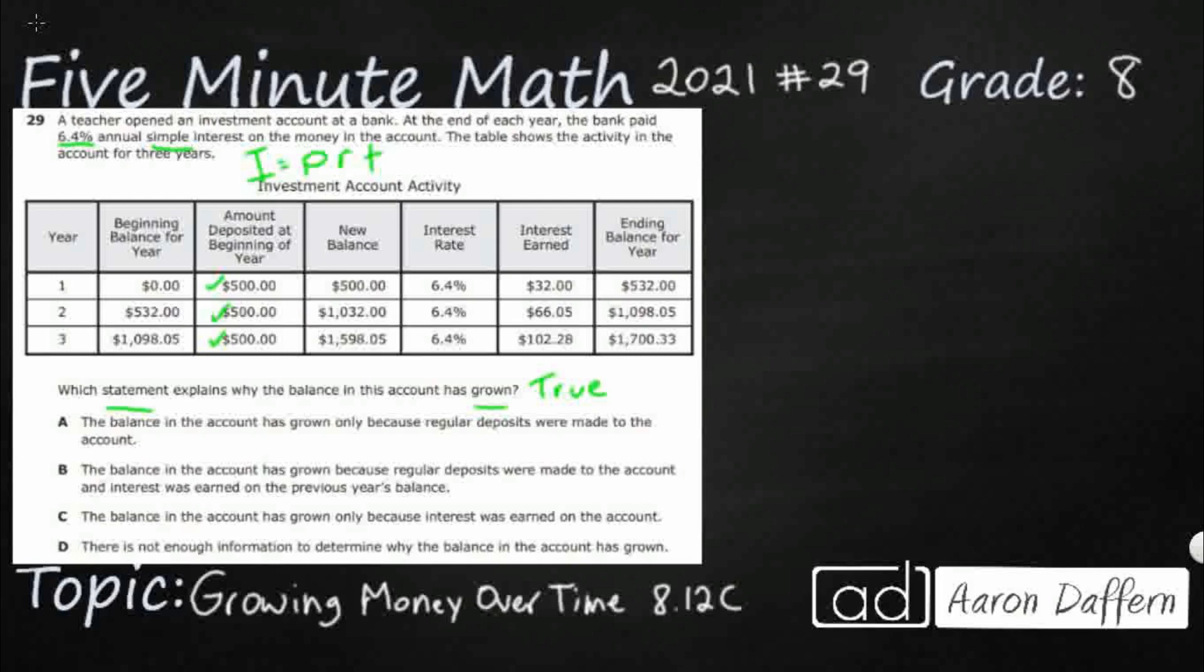So the new balance is now $500 because we're going to add zero plus 500 equals your 500, but then you get this interest rate. So at the end of the year, the interest is the principal 500 times the rate, 6.4% times the time one year,